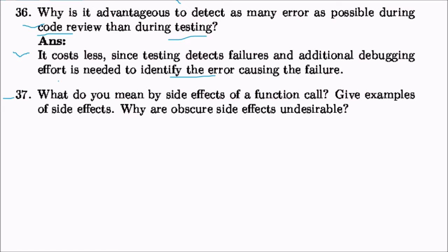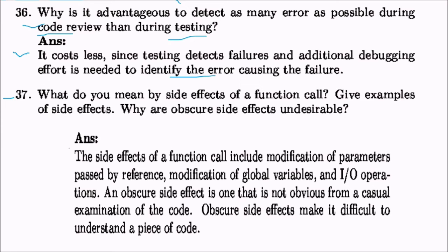What are side effects of a function call? Side effects include modification of parameters passed by reference (which changes the original value), modification of global variables, and input/output operations. An obscure side effect is one that is not obvious from a casual examination of the code. Obscure side effects make it very difficult to understand a piece of code.